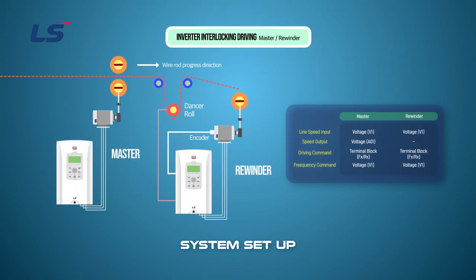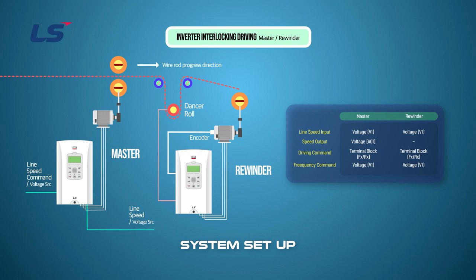If there is no abnormality in solo driving, operate in conjunction with master and rewinder inverters. Give the master a speed command and apply the master's speed output to the rewinder's speed command. Signal matching and adjustment between master and rewinders are required. Specific signal adjustment is carried out in the next section, and approximate speed linkage exercise is carried out in this section.